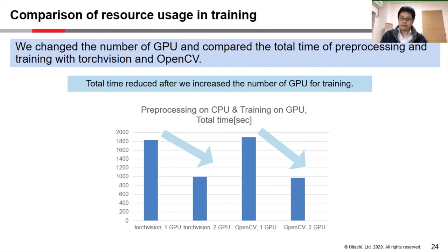From this figure, we can say that for this use case, we should increase the number of GPUs for training rather than increasing the number of CPUs for preprocessing. Also, we should use GPU for training only, since training consumes lots of GPU resources and cannot afford preprocessing anymore.